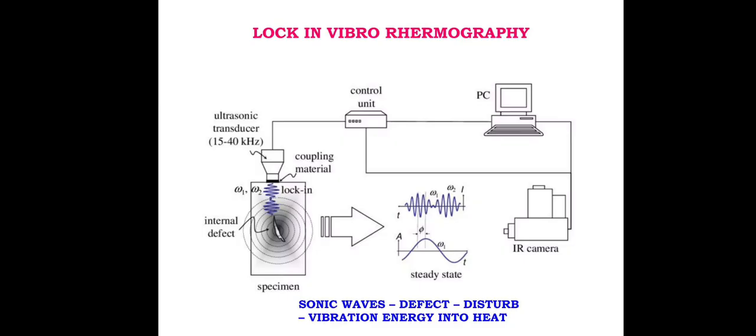Lock-in vibro thermography is similar to optical lock-in thermography with a difference in excitation source. In this technique, mechanical elastic waves at higher frequency are injected into the specimen. The figure shows the arrangement of lock-in vibro thermography. This equipment consists of an ultrasonic vibration source, IR camera, control unit, computer with processing software, and display unit. Sonic waves propagate in the material and when they find internal defects, they trigger the dispersion of vibration energy into heat mainly by friction between the contacting surfaces of the defect. Subsequent heat is conducted to the surface where it can be detected by the IR camera. The frequency and shape of response curves are preserved. The change in amplitude and phase delay is processed and recorded for analysis.